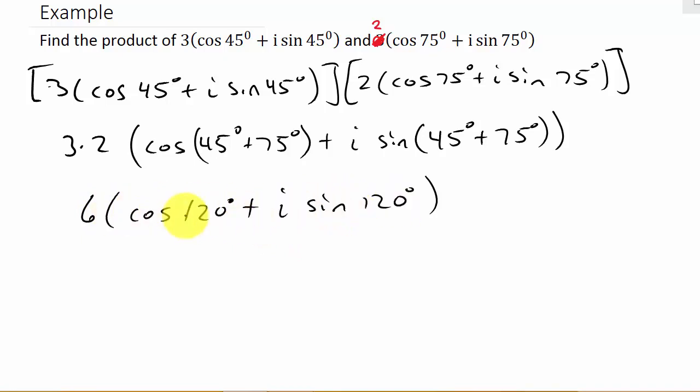Well, let's change this to rectangular form. So I've got 6 times, now I need the cosine of 120. Let's find the cosine of 120. Well, we know that 120 is here in the second quadrant. So I need to find my reference angle, and we'll represent the reference angle with the subscript r.